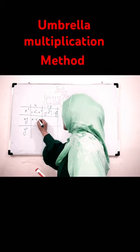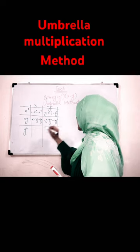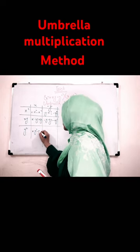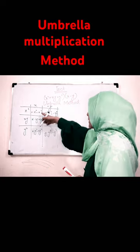x into xy becomes x square y, minus y into xy becomes minus xy square. x into y square is equal to xy square, minus y into y square minus y cube.